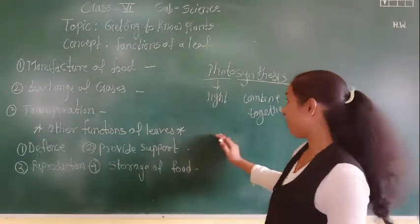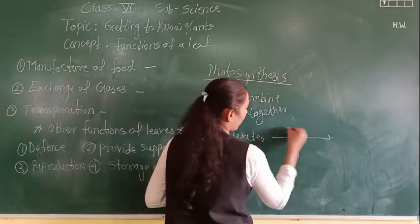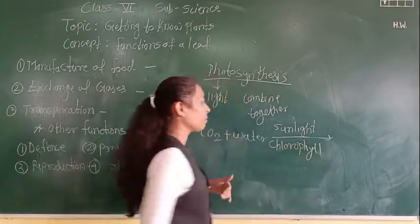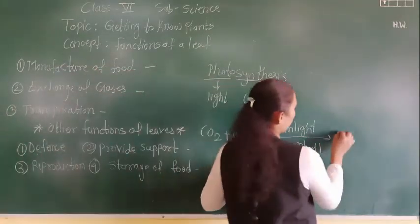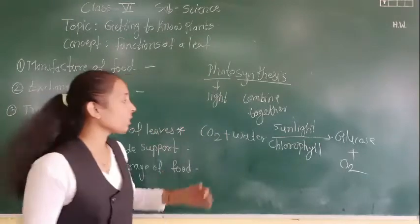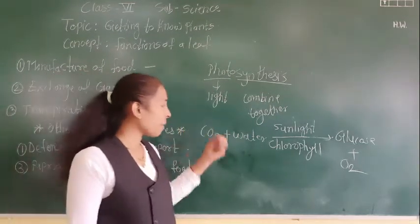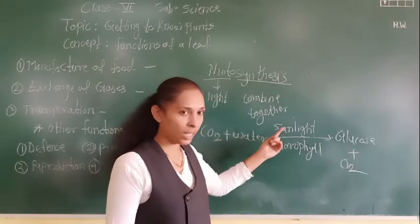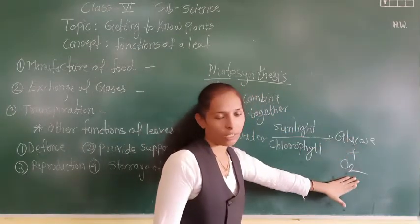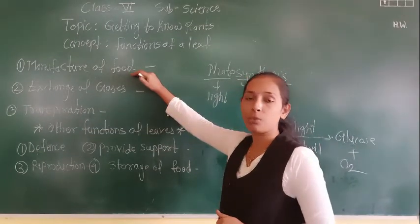In photosynthesis, green plants use carbon dioxide and water in the presence of sunlight and chlorophyll to make their own food in the form of glucose, and they also release oxygen (O₂). So the equation for photosynthesis is: CO₂ plus water, combined in the presence of sunlight and chlorophyll, produces glucose and releases oxygen gas, which is very useful for us in the breathing process. This is the very important function of the leaf — manufacturing of food.